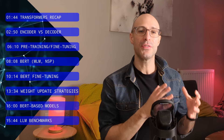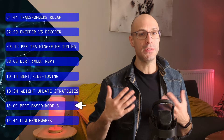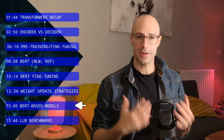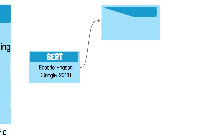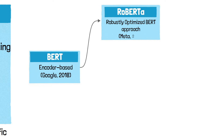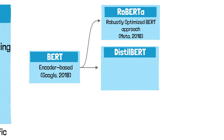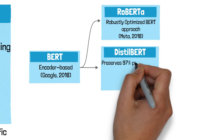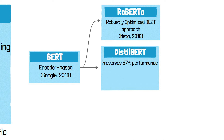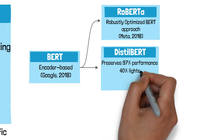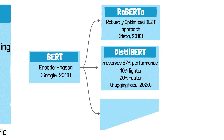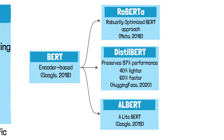In the months and years after its initial release, many models have been developed based on BERT's architecture. RoBERTa is an optimized version of BERT that tweaks the training process for better performance. DistilBERT is a smaller, faster version of BERT that retains 97% of its language understanding capabilities while being 40% lighter and 60% faster. ALBERT focuses on reducing the model size significantly without sacrificing performance, addressing the memory consumption issue of BERT.